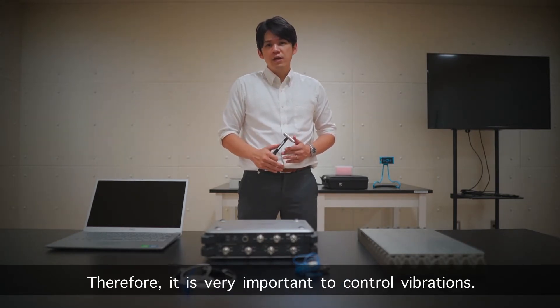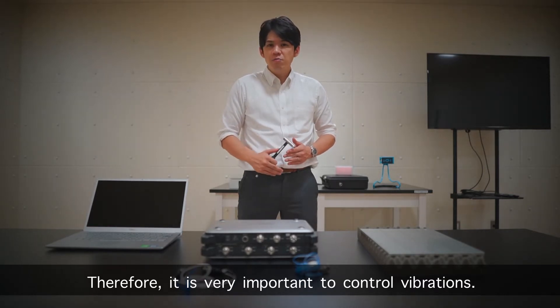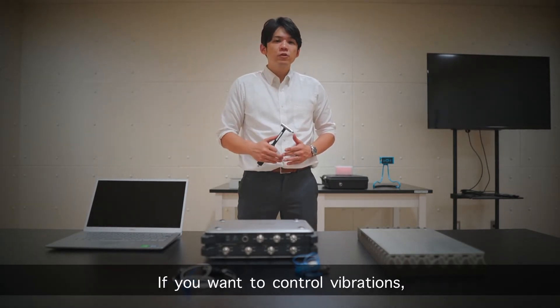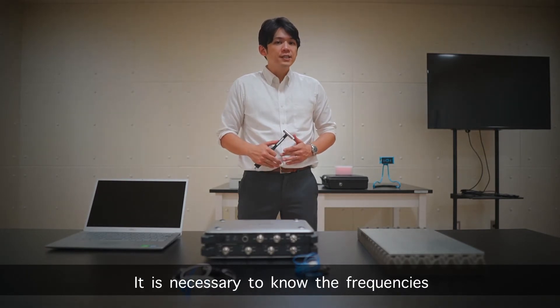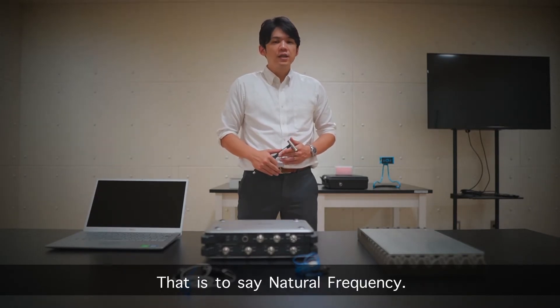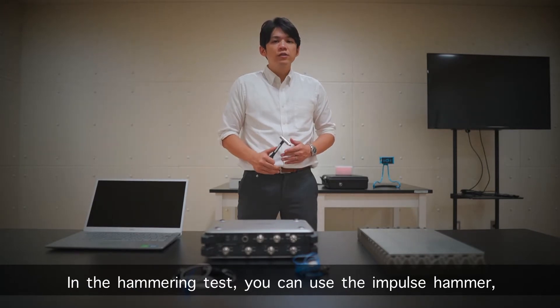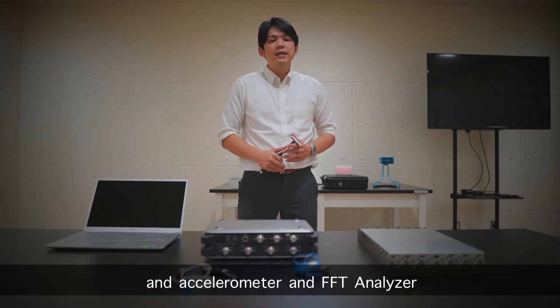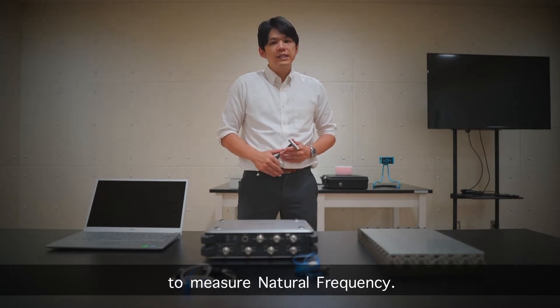Therefore, it is very important to control vibrations. If you want to control vibrations, it is necessary to know the frequencies at which the measuring object easily vibrates. That is to say, natural frequency. In the hammering test, you can use the impulse hammer, an accelerometer, and FFT analyzer to measure the natural frequency.